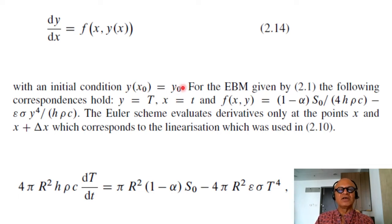So it's a function of longitude and temperature at that longitude with an initial condition y(x_0) of y_0. So if you start at dateline with some value that's just say y_0. For EBM given in equation 2.1 which was this equation we looked at. The following correspondence is whole.